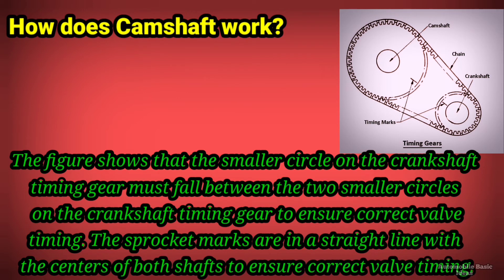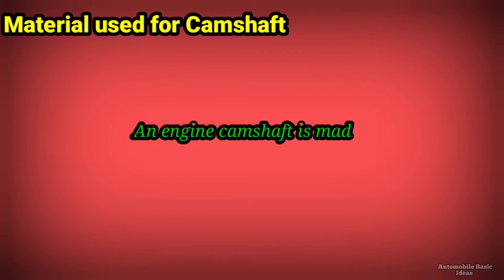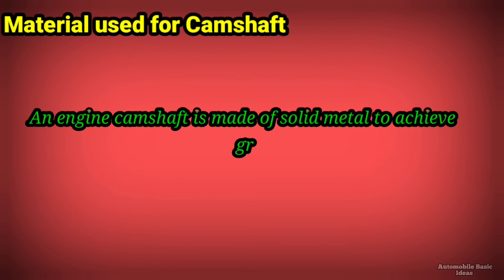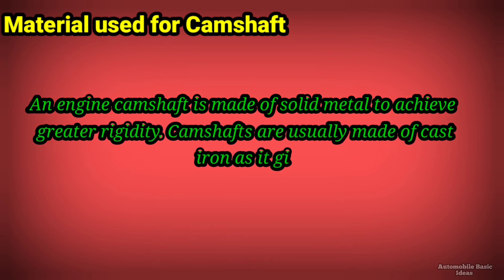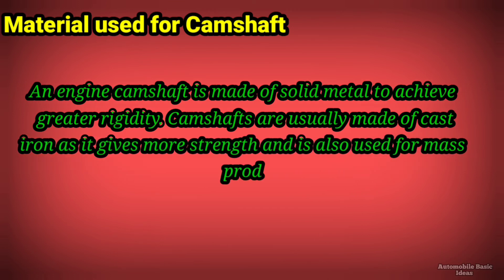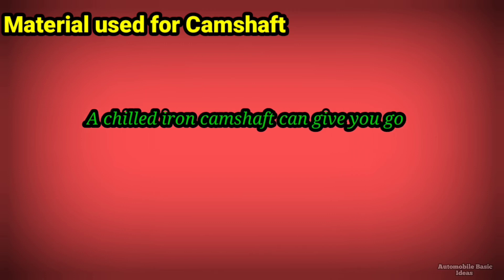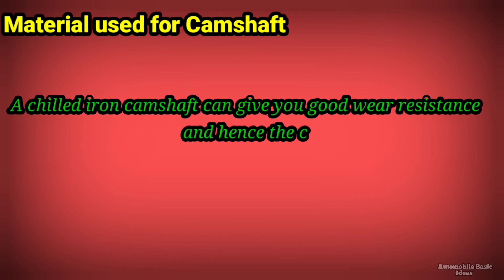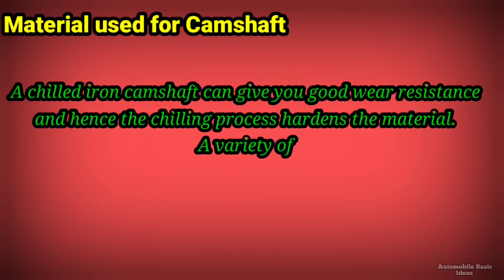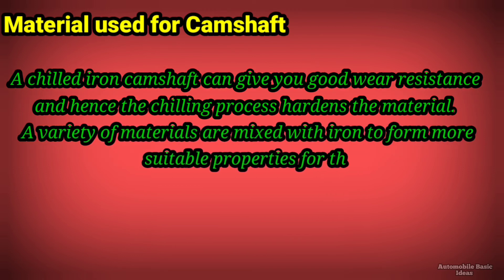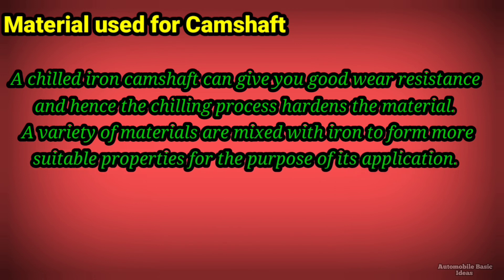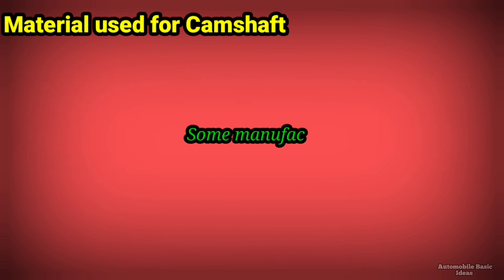An engine camshaft is made of solid metal to achieve greater rigidity. Camshafts are usually made of cast iron, as it gives more strength and is also suitable for mass production. A chilled iron camshaft provides good wear resistance, as the chilling process hardens the material. A variety of materials are mixed with iron to form more suitable properties for the purpose of their application.